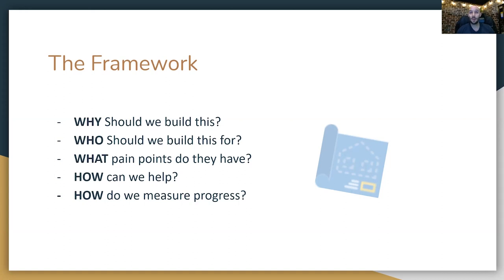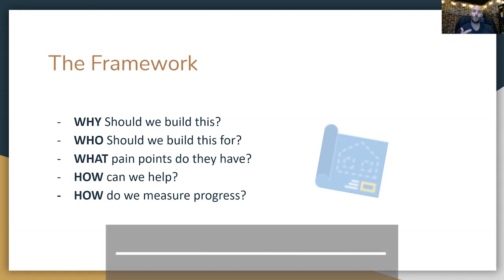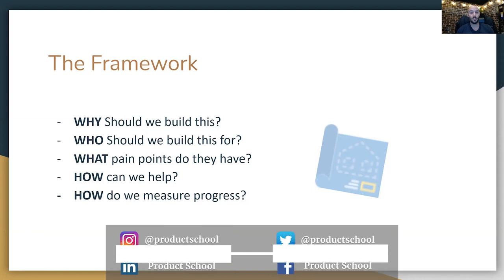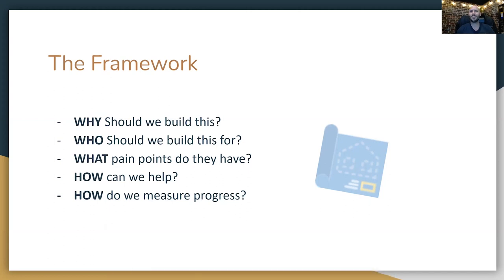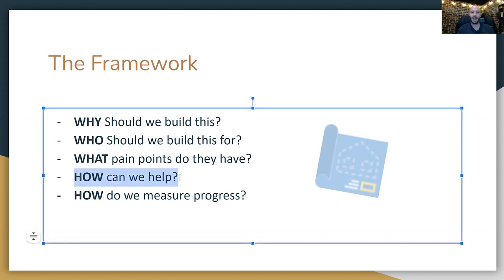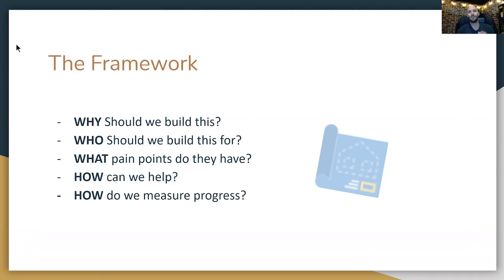We're asking: why should we build this? Who should we build it for? What are the pain points for those users? How can we build features that help them and address those pain points? And then lastly, how do we measure that? I've noticed a lot in the PM world people jump to question four — how can we help, what should we build — without ever validating that idea or that ask. This is a much more structured approach that narrows from high level down to specific, valuable features.